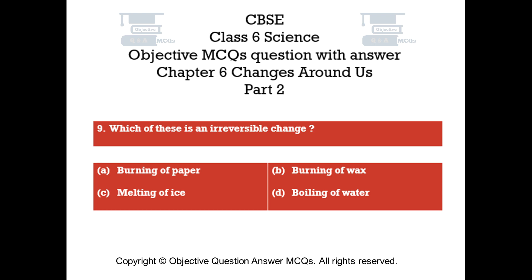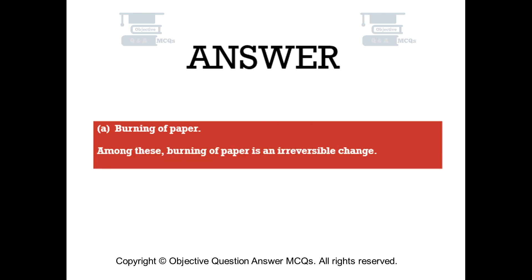Question number 9. Which of these is an irreversible change? Option A: burning of paper. Option B: burning of wax. Option C: melting of ice. Option D: boiling of water. The right answer is Option A: burning of paper. Among these, burning of paper is an irreversible change.